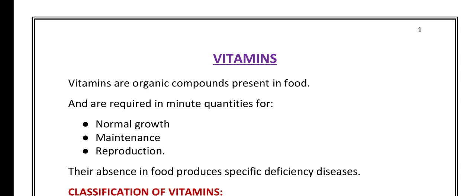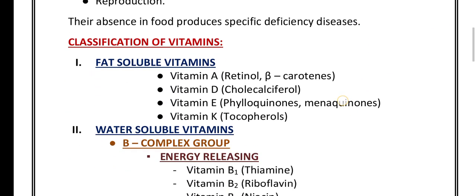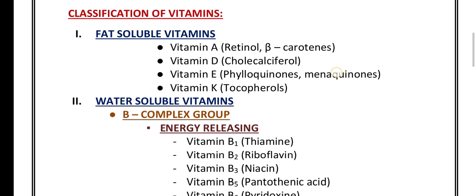Now coming to classification of vitamins. Vitamins are broadly classified into two groups: one is fat-soluble vitamins and another one is water-soluble vitamins. Fat-soluble vitamins consist of four vitamins.